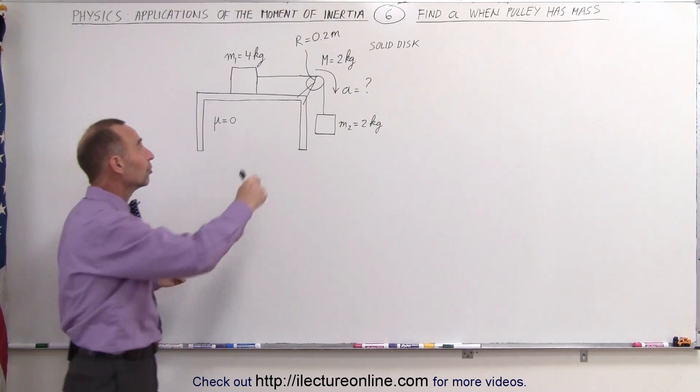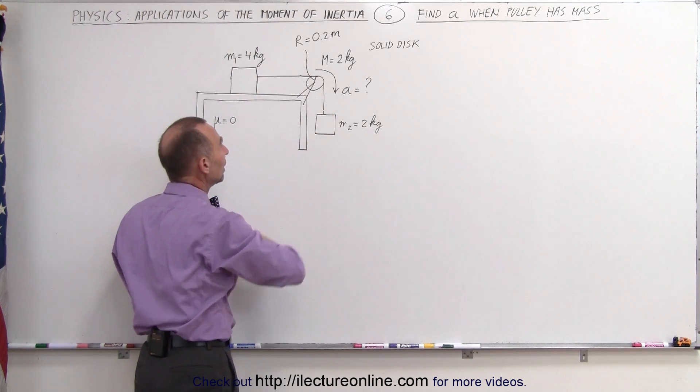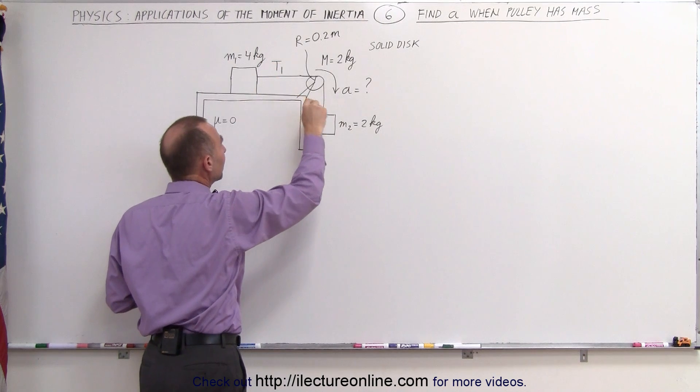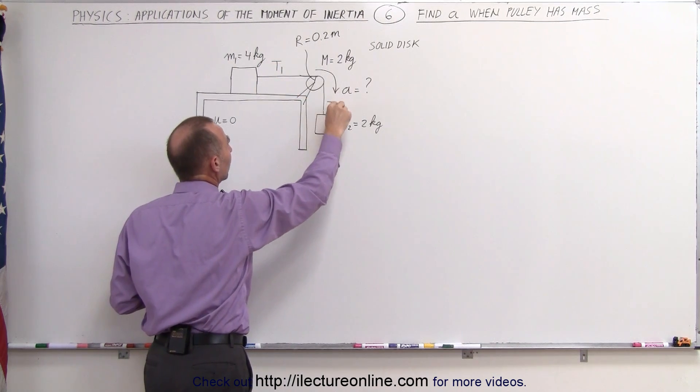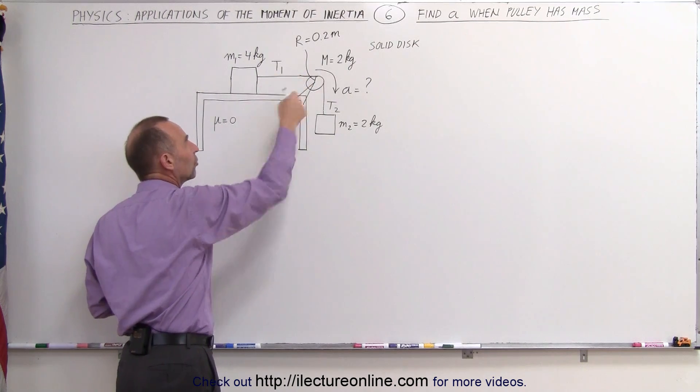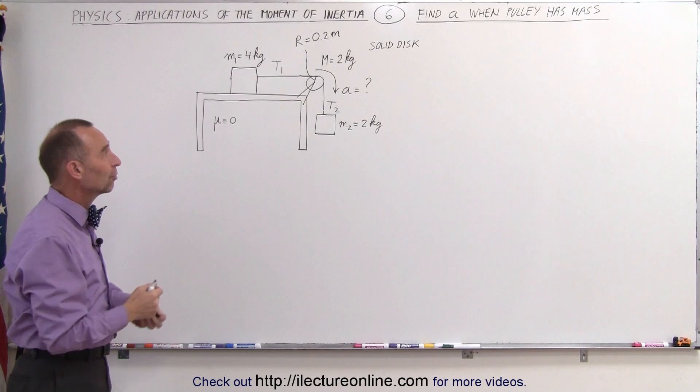Also, even though there's a single string connecting the two masses M1 and M2, the tension on this side of the string, let's call it T1, will not be equal to the tension on the other side of the string, let's call it T2, because between those two points of the string there's a pulley that has mass and therefore it has a moment of inertia.